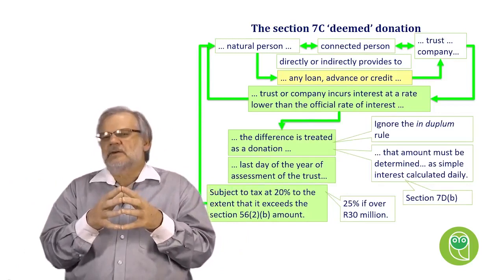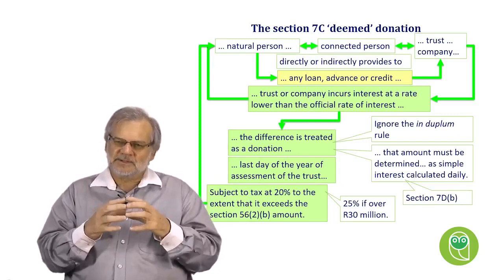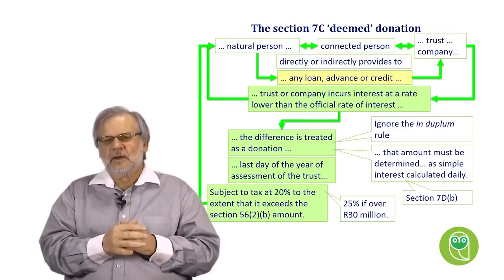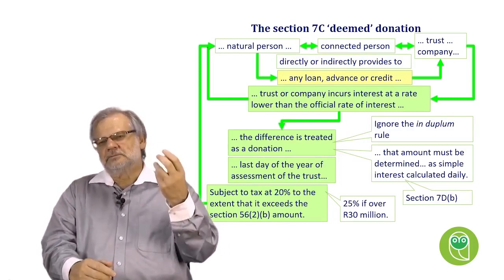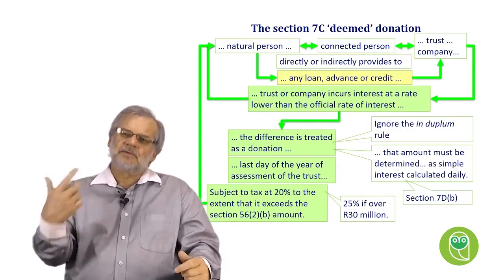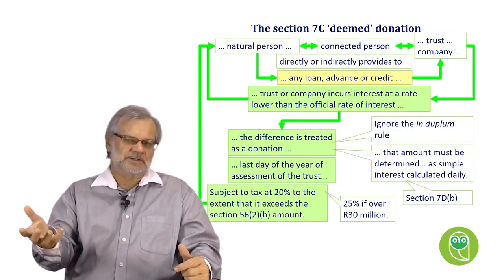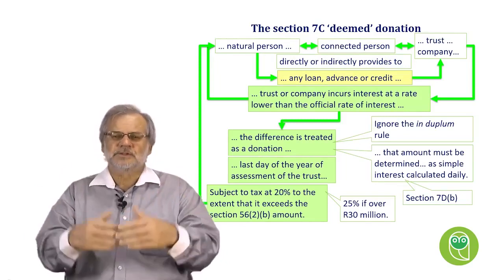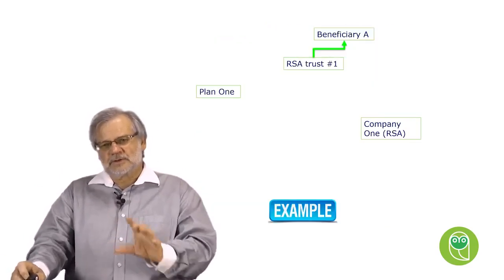Donation tax is an estate duty in advance. What SARS was saying here is that by making this interest-free loan, we sell assets to the trust, we pay the capital gains tax on the resulting capital gain, but we have saved estate duty. We didn't donate, so we've saved donations tax, and we have reduced the value of the property in the deceased estate, saving estate duty — saving something at 20%. Their answer was to bring in this deemed donation to tax us on that 20%.